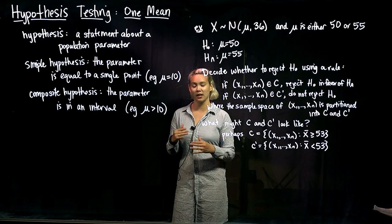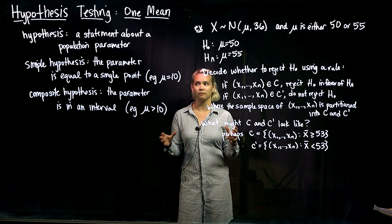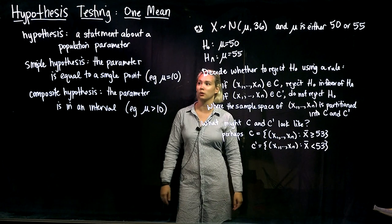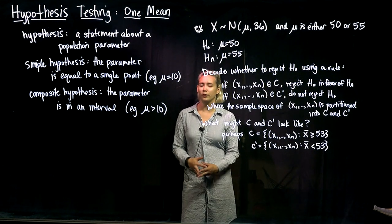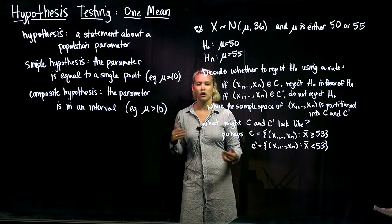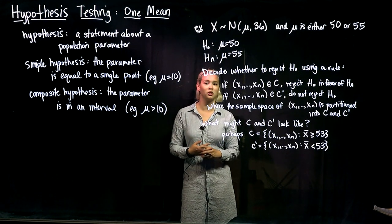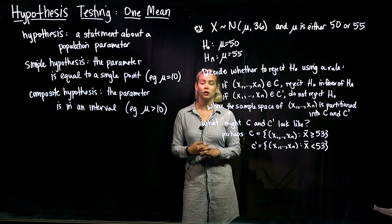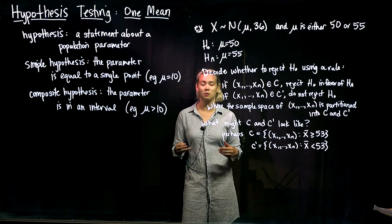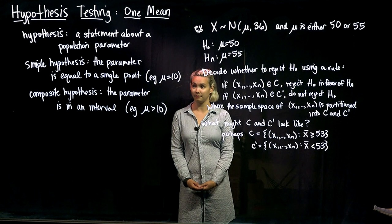We're going to start off by using hypothesis testing to think about one mean. A few important terms to get out of the way — first of all, what is a hypothesis? A hypothesis is just a statement about a population parameter. So if we're doing hypothesis testing for one mean, we're going to be making hypotheses or statements about this population mean.